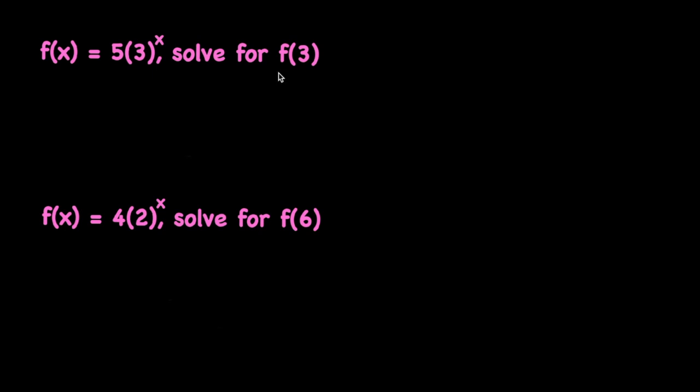Since we have our x equal to 3, we plug this to any x value in the equation. That means that the equation is going to be f of 3 is equal to 5 times 3 to the third.